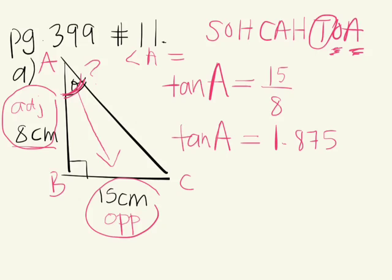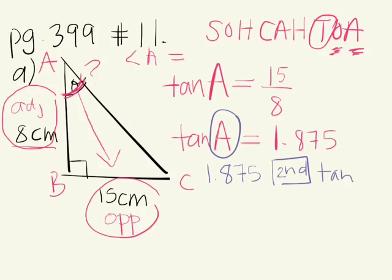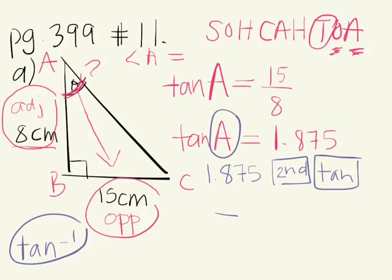This number gives us the ratio, but we need to find the angle. We want to know what the angle is equal to, so we're going to do the inverse. You have to punch in shift or second on your calculator — second tan, because we're using the inverse button of tan. Find that on your calculator. If we round the answer, angle A is approximately equal to 62 degrees.